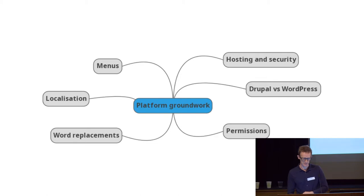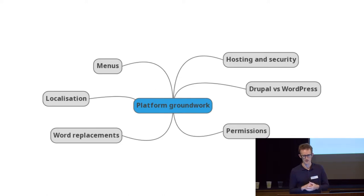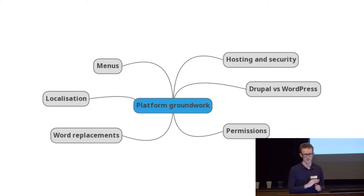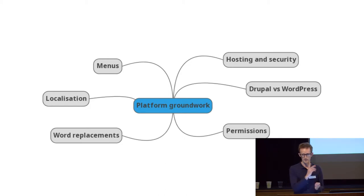In CiviCRM you can set up word replacements, which we liked because it meant we could replace the word 'contribution' with 'payment' and 'organisation' with an S, and a few other things. You can just find it in the menu, define your word replacements, and then right through your interface wherever it said 'contribution' in the boilerplate CiviCRM, it will now say 'payment.' There are some exceptions — for instance, report column headings might still show the old words — but it's not a big deal.